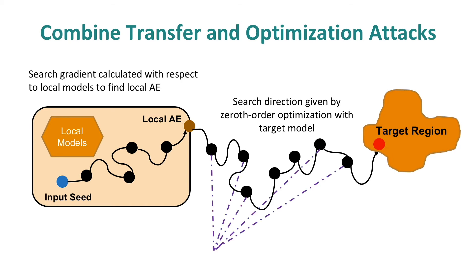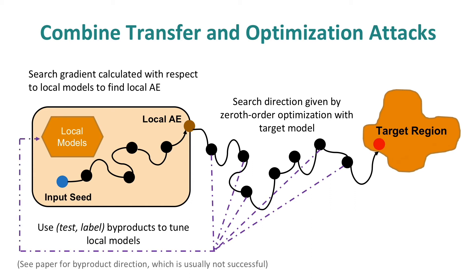On the other hand, during the optimization attack, we make many queries to the target model and collect the predicted labels. So we collect these labeled queries and fine-tune the local models. Our hypothesis is these intermediate results contain decision boundary information of the target model, and once the local models are fine-tuned on this data, they will become more similar to the target model and their transferability will be improved. But empirically, this direction does not work for larger datasets, so I'll omit this part from the remaining talk.